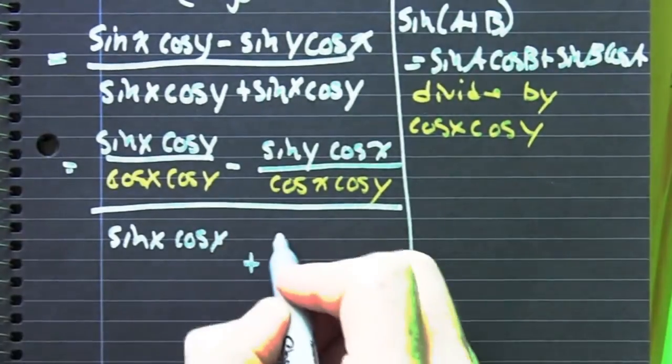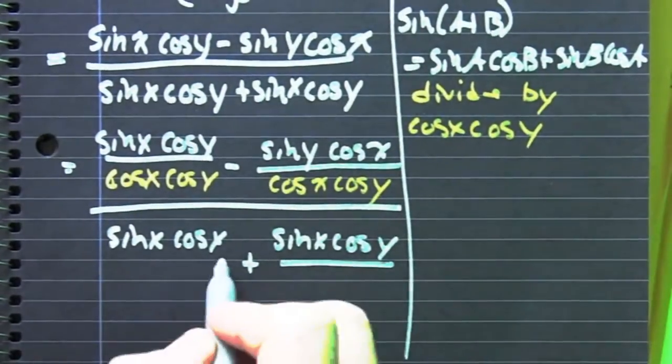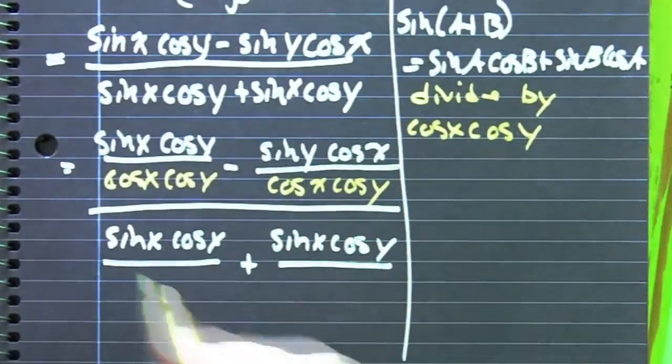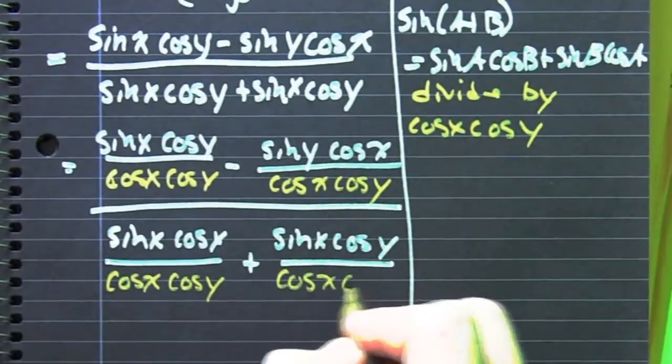All right? The sine x cosine y, sine y cosine x, divided by cosine x cosine y, cosine x cosine y. Okay, and now we're left with dramatic reduction.